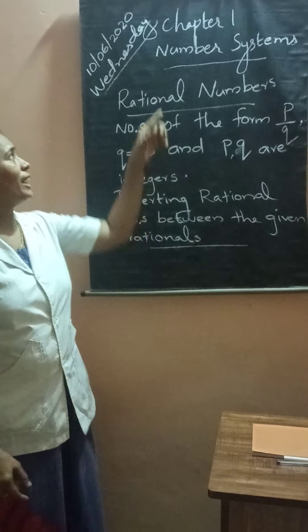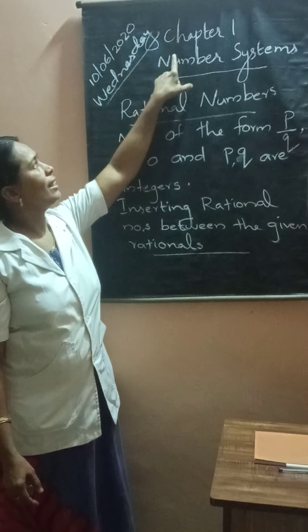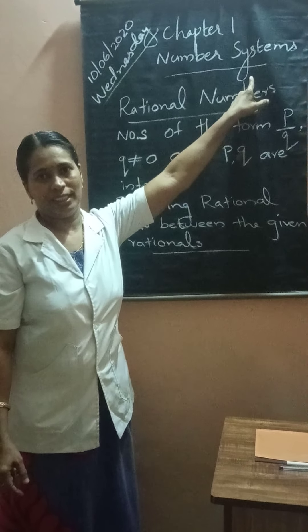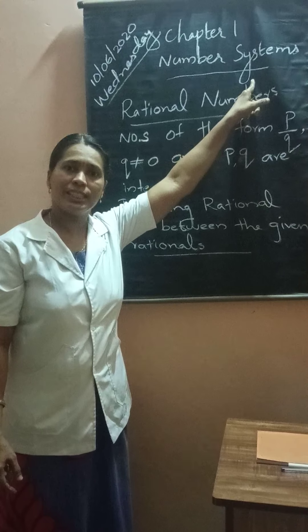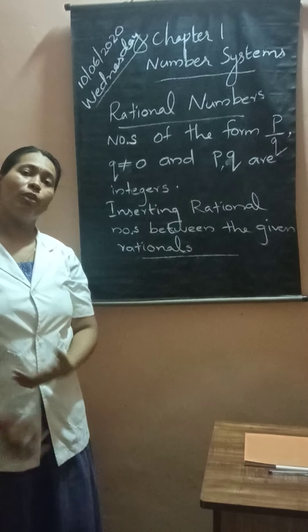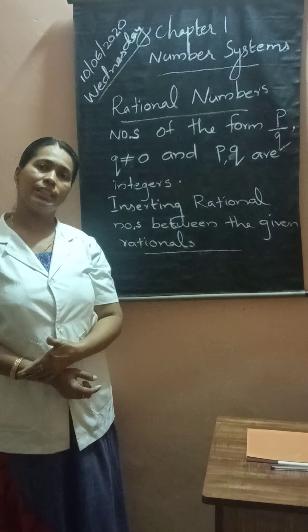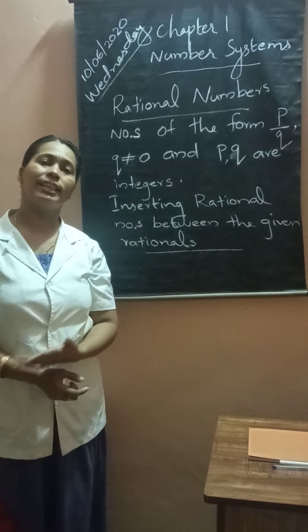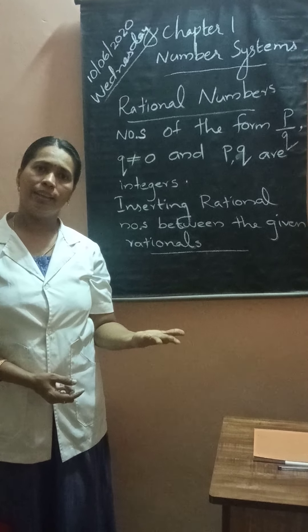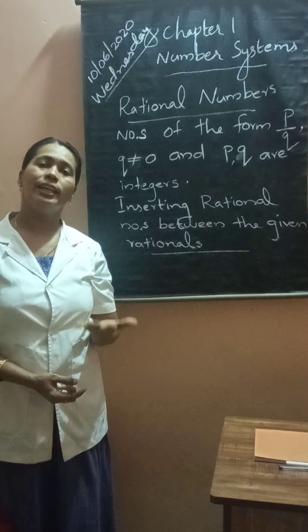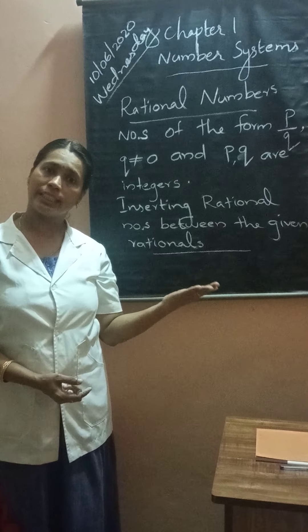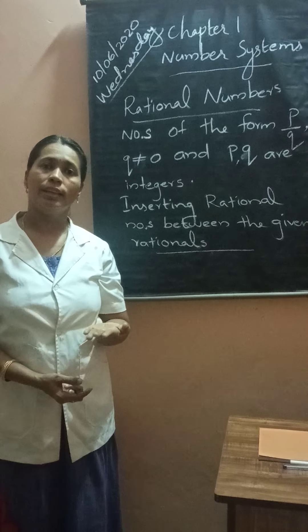Our today's first chapter is Number Systems. Number systems are already known to you. From earlier classes onwards, we have started with natural numbers: 1, 2, 3, 4, 5, 6, etc. Then we studied 0, 1, 2, 3, 4, 5, 6, etc., called whole numbers.